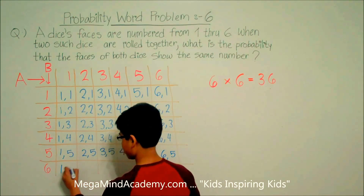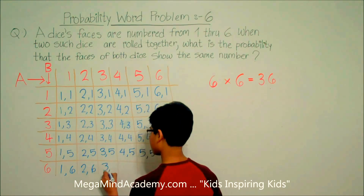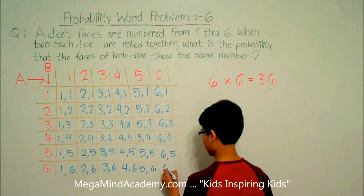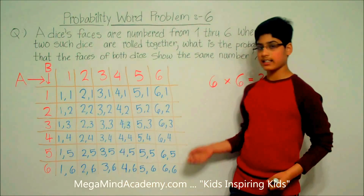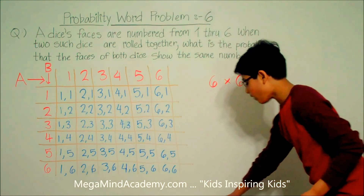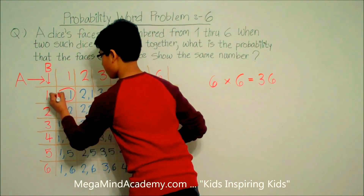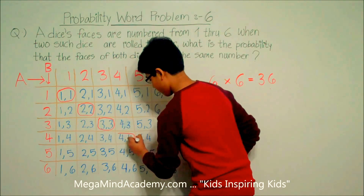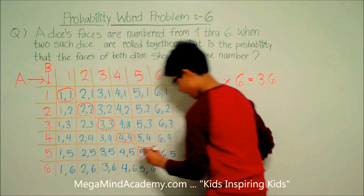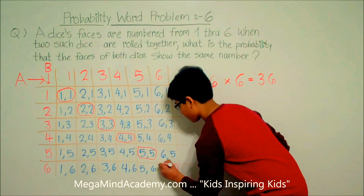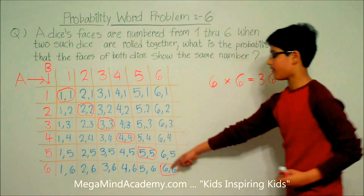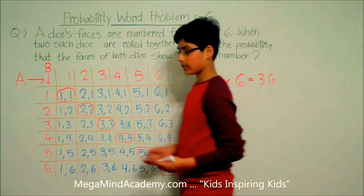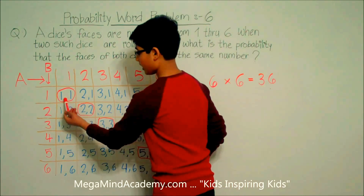Then 1 and 4, 2 and 4, 3 and 4, 4 and 4, 5 and 4, 6 and 4, then 1 and 5, 2 and 5, 3 and 5, 4 and 5, 5 and 5, and 6 and 5. The next row has 1 and 6, 2 and 6, 3 and 6, 4 and 6, 5 and 6, and 6 and 6. You can see that we have 36 different outcomes. However, only 6 of these outcomes show both dice having the same number.